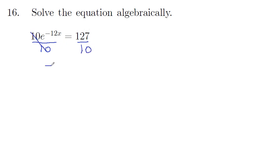So these guys cancel. We get e to the negative 12x is equal to 127 divided by 10, which would be 12.7.